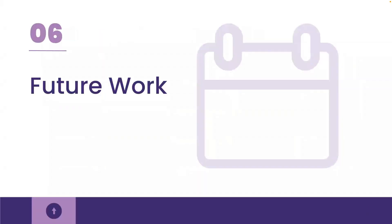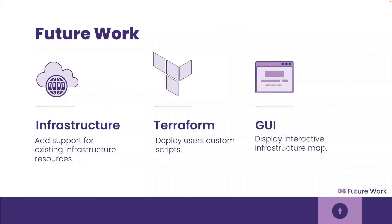Although Cascade fulfills the need to quickly deploy containerized applications, there's always more that can be added to an open source project. Currently, Cascade creates a new VPC and subnets when a user first deploys their infrastructure using our GUI. In the future, we would like to add functionality to support the user's already existing VPC and subnets. Another improvement would be adding support for uploading a Terraform config file so that users can redeploy stacks with their custom configurations. Finally, we plan to provide an interactive infrastructure map on the Cascade dashboard to help users understand the relationships between resources.